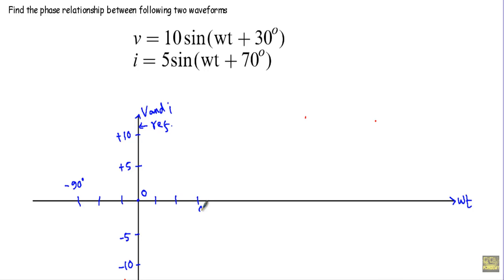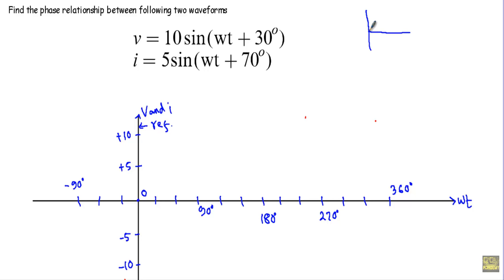The axis continues: 90, 120, 150, 180, 210, 240, 270, 300, 330, 360 degrees. A sinusoidal quantity reaches its maximum value at 90 degrees from its origin, returns to zero at 180 degrees, reaches its negative maximum at 270 degrees, and returns to zero at 360 degrees.